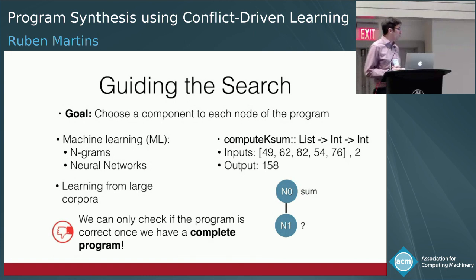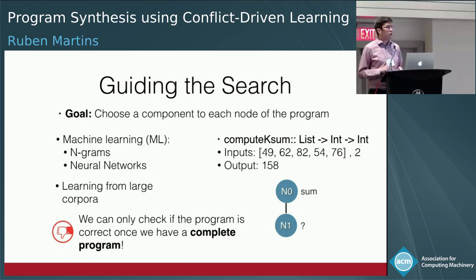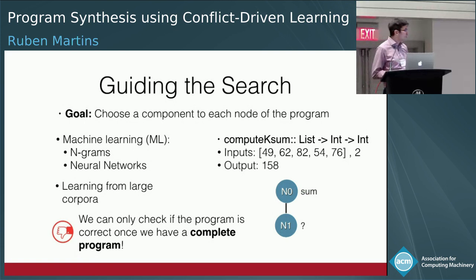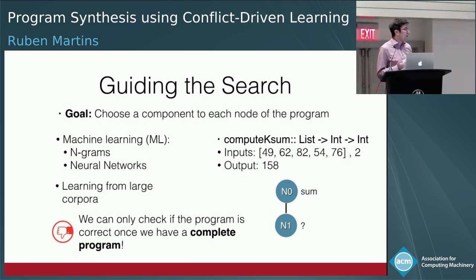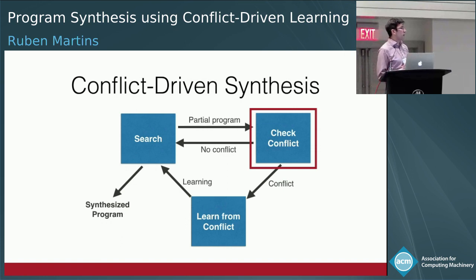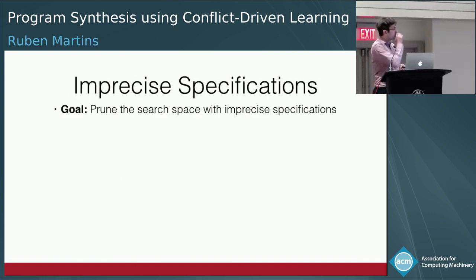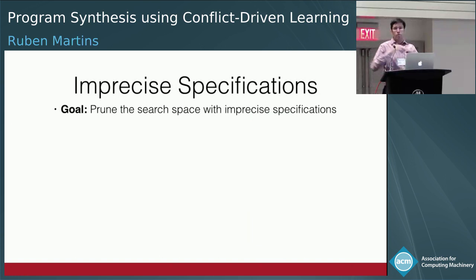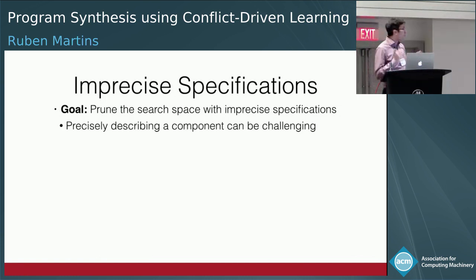The downside of pure enumerative search is that we only know if a program is correct once it's complete — we run it on input-output examples or give it to a verifier. Can we do better? Can we determine early on that no possible completion of a partial program will lead to a solution?